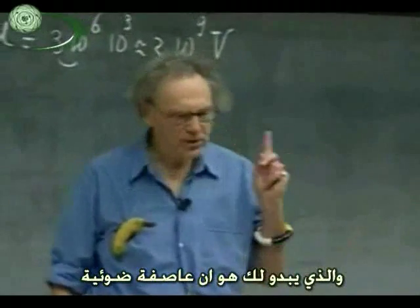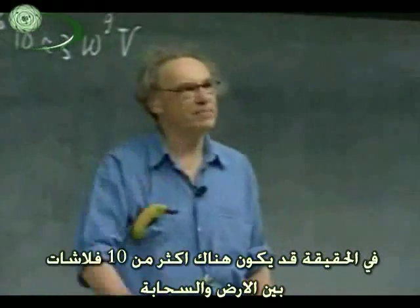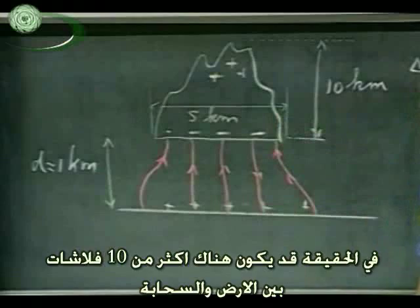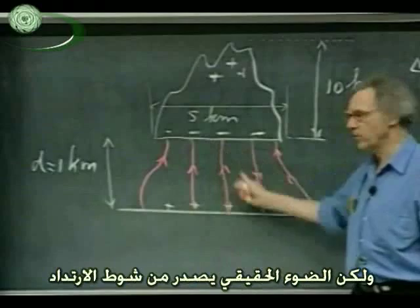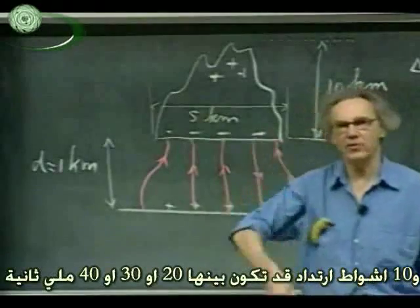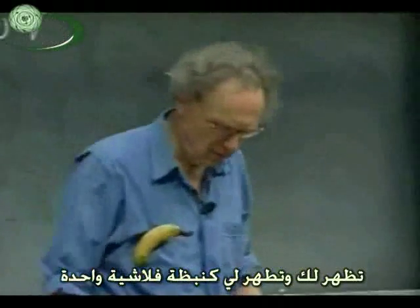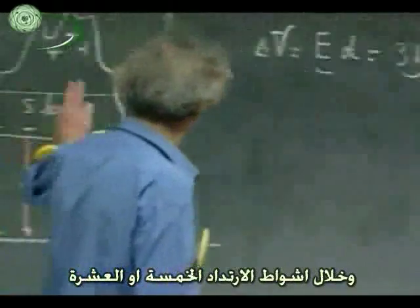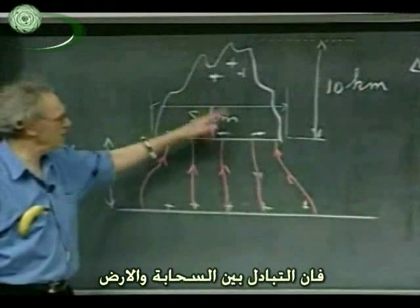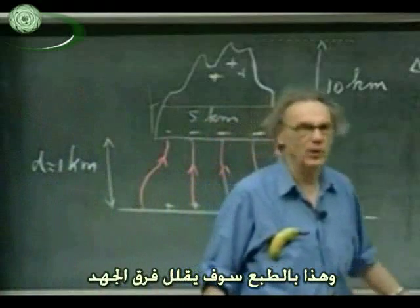So what appears to you as one lightning bolt could in fact be ten flashes back and forth between the cloud and the earth. The real light is not in the step leader — that's very little light — but the real light is in the return stroke. Ten return strokes, maybe 20 to 40 milliseconds apart, appear to you and me as only one flash, taking place in as little as a tenth of a second. During these five or ten return strokes, you exchange between the cloud and the earth maybe a total of 25 to 50 Coulombs.